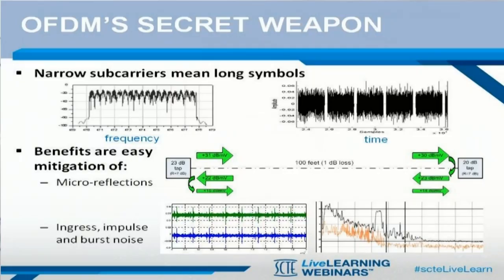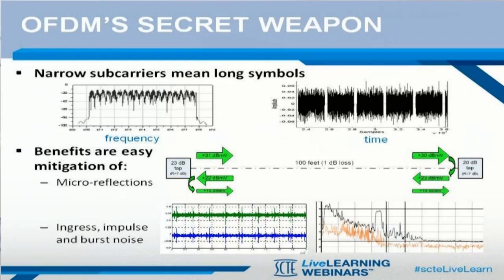Also, since the OFDM symbols are much longer in the time domain, channel equalization is much easier, micro reflections are less of a challenge, and heavy upstream impulse and/or burst noise can be easily mitigated by forward error correction technologies. Using OFDM in cable would lead to better economies of scale as well, since Wi-Fi and LTE also use it.